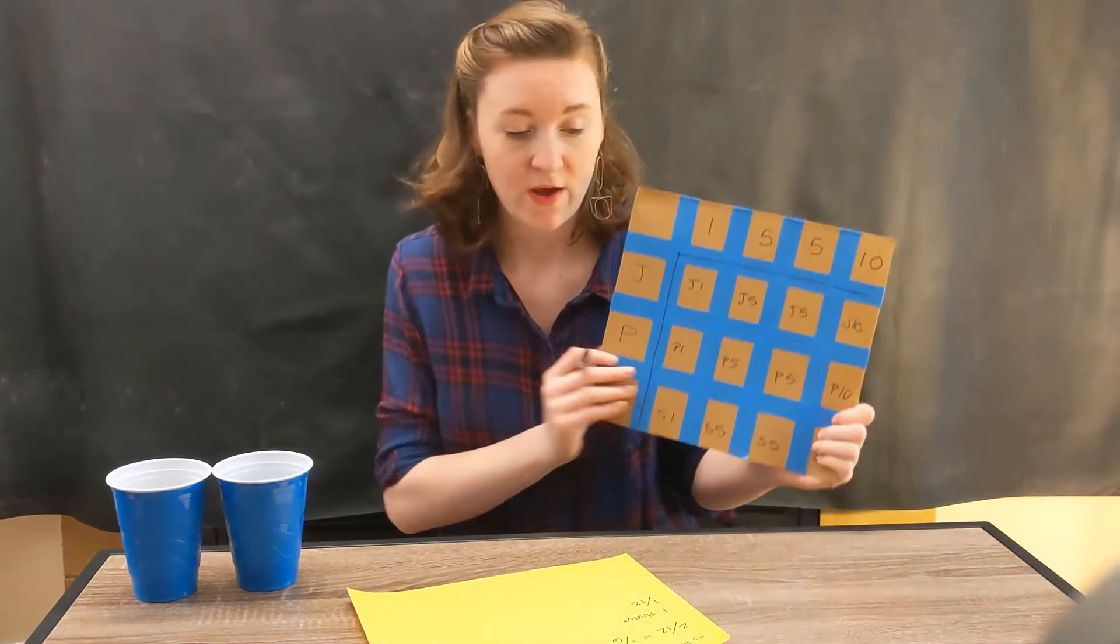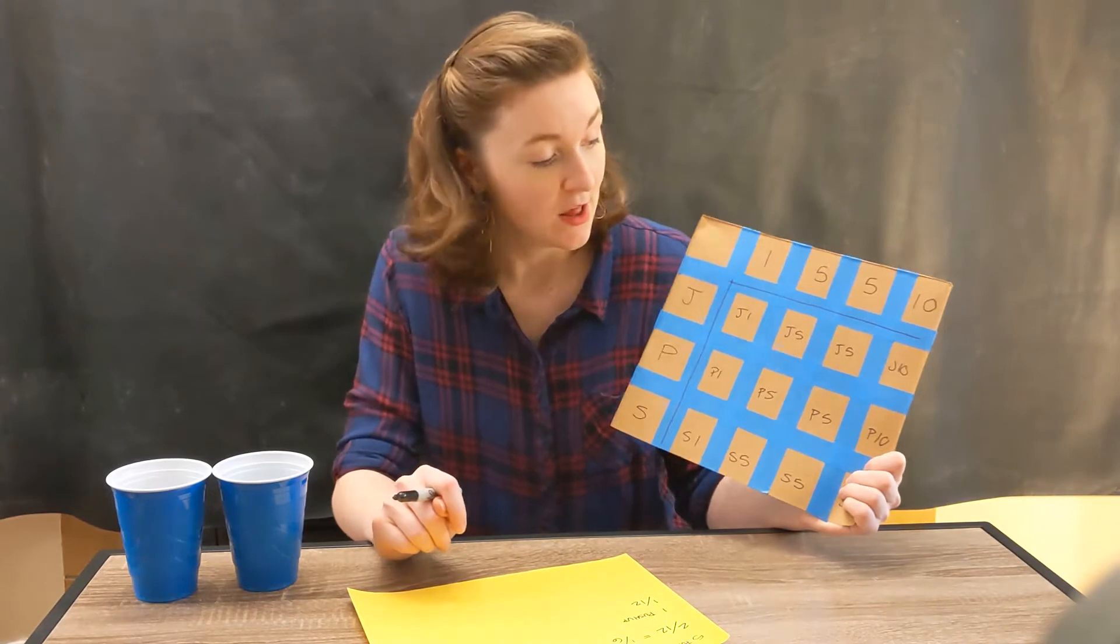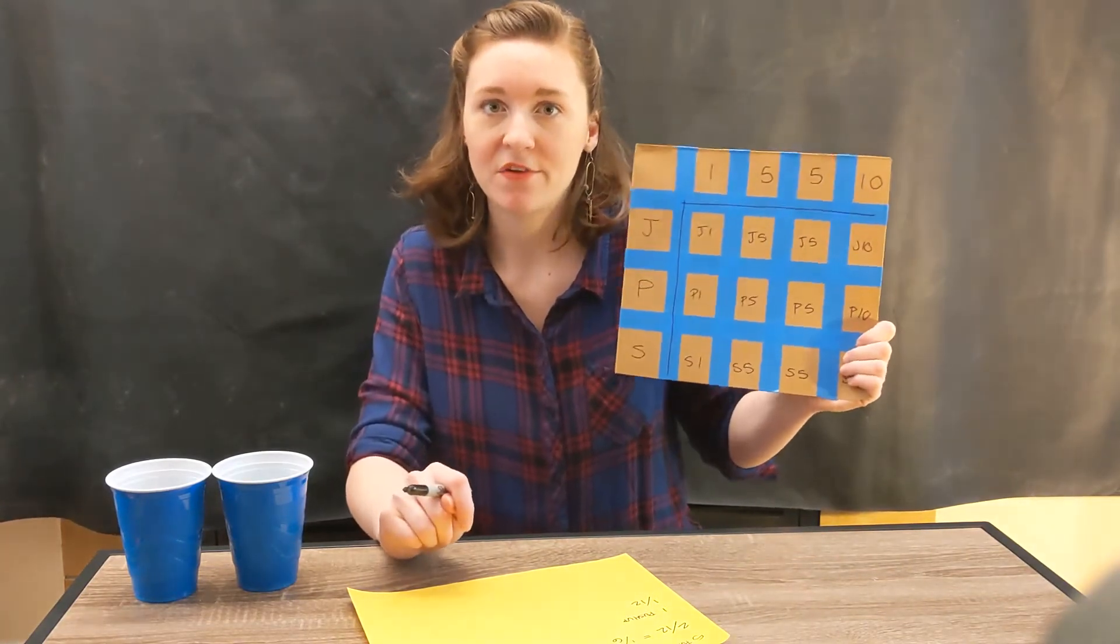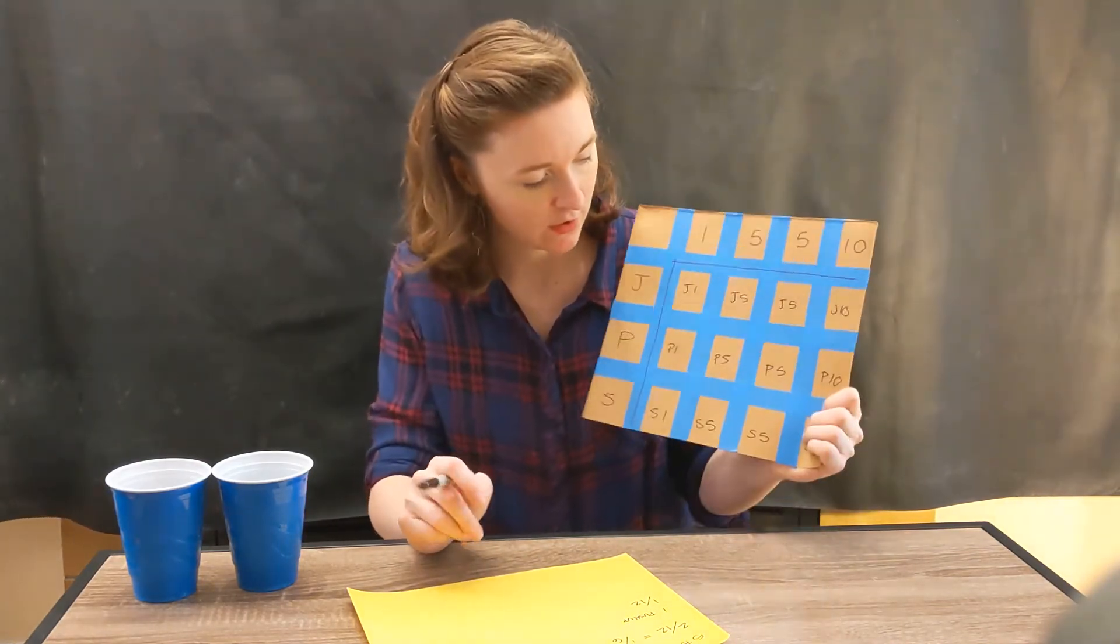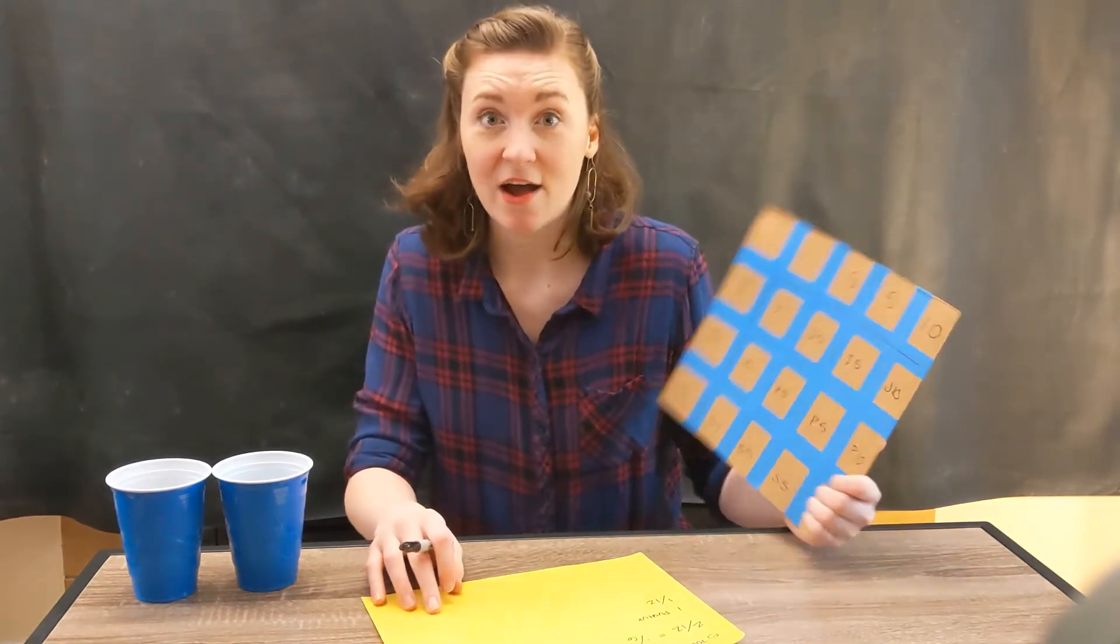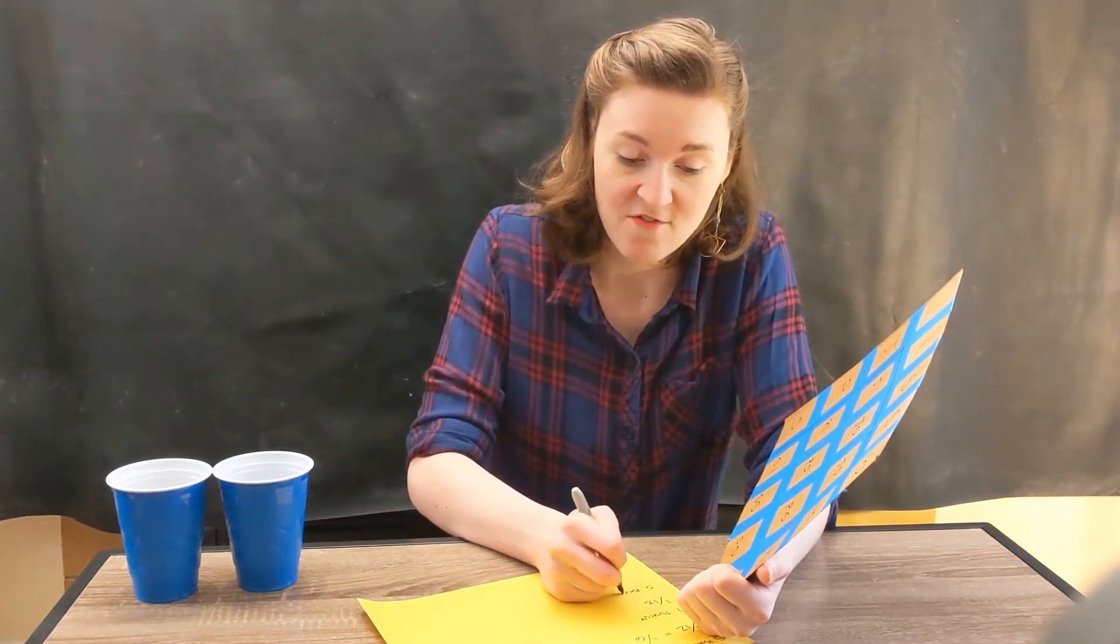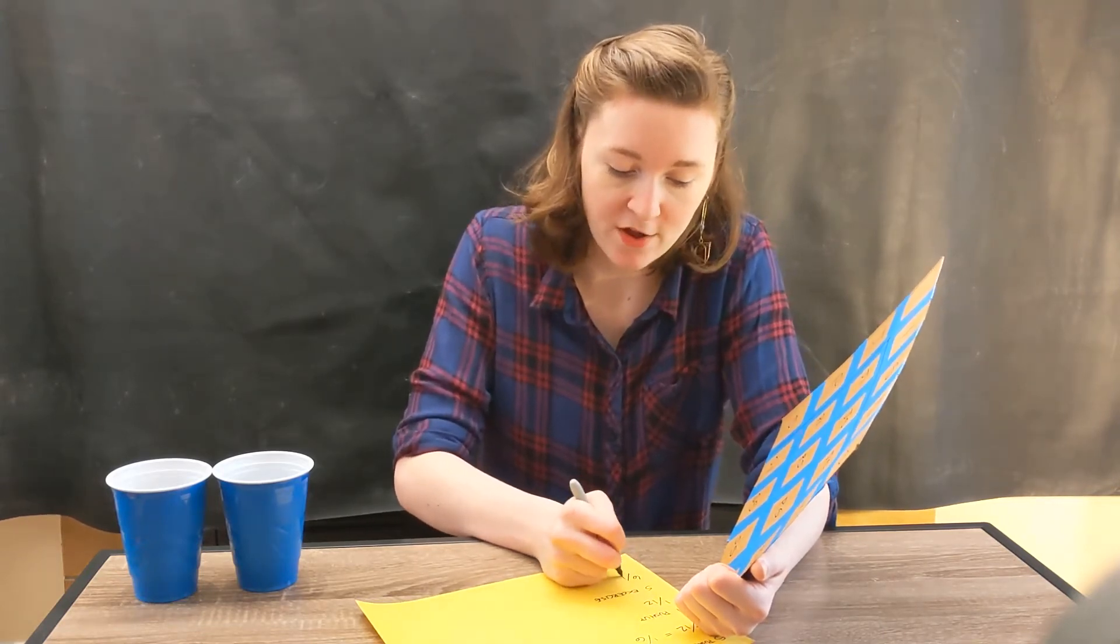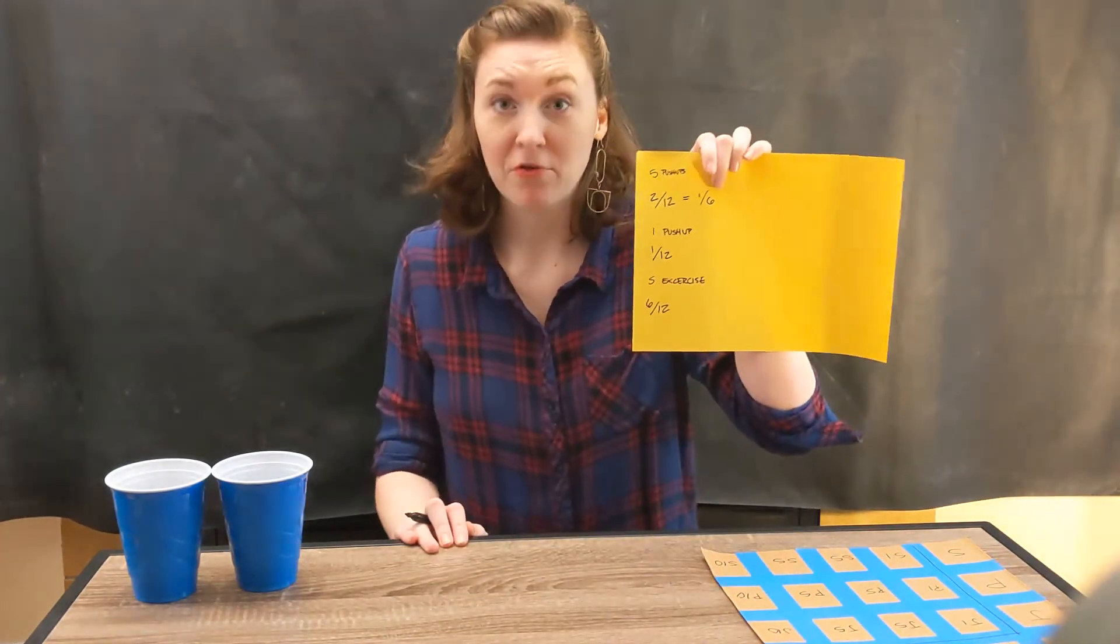So this is one of the ways that we can find outcomes using our chart. And we can also ask questions like, what is the likelihood that we will have to do an exercise five times? So what's the likelihood that we're going to pull a five out? Let's look. One, two, three, four, five, six. We have six outcomes that have you doing an exercise five times. So that's a six in twelve chance. Now six is a lot higher than one or two, so this is the most likely outcome we've had so far.